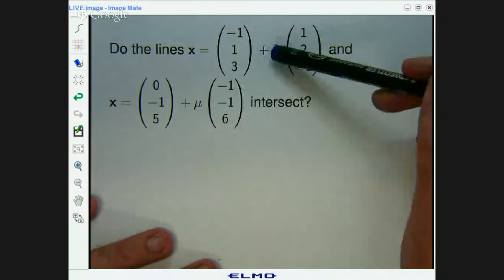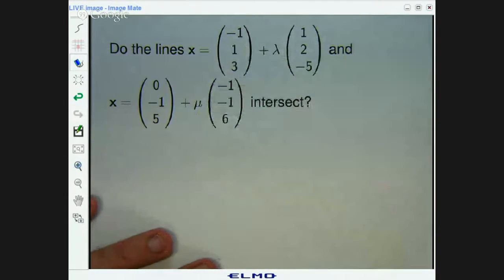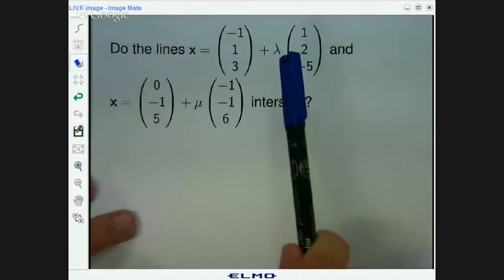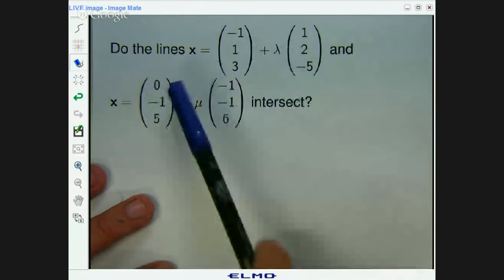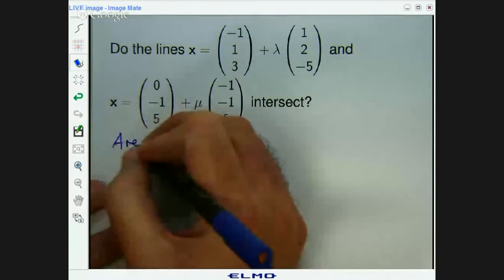We've got the parametric vector form of both of the lines, and the parameters are lambda in the first line and mu in the second line. What they're really asking us is, are there values of lambda and mu such that these two equations are equal? That's really what they're asking us.